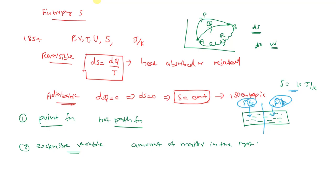Regarding the unit: dQ has units of Joule (energy), and temperature has units of Kelvin, so the unit of entropy is Joule per Kelvin.